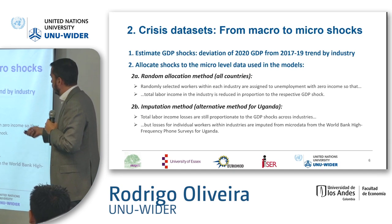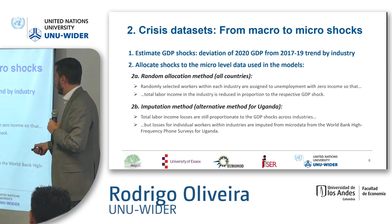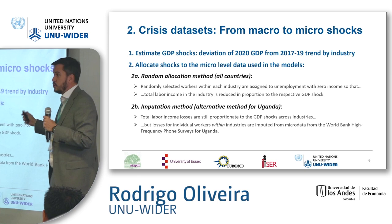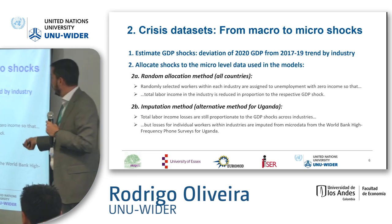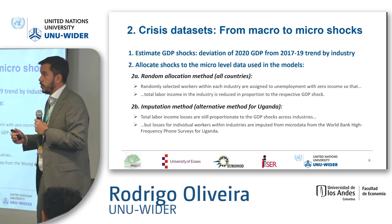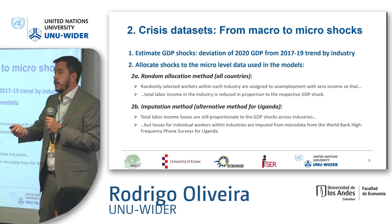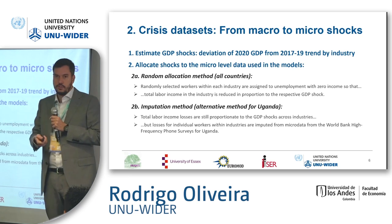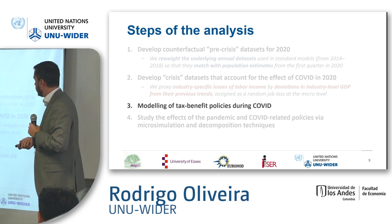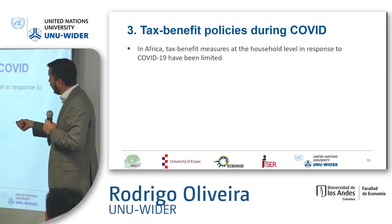We do this random allocation method and also what we call the imputation method using the World Bank phone surveys for Uganda to show that it doesn't matter much which method you use — the results are quite similar. The biggest difference is that in Uganda we can observe a higher impact for informal workers, because we have information on whether workers are formal or informal in the World Bank phone survey.